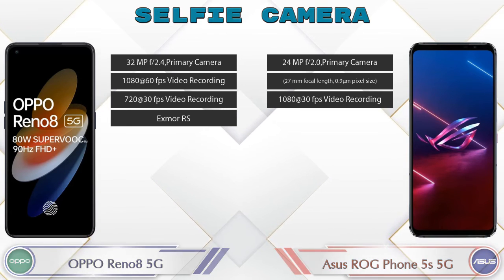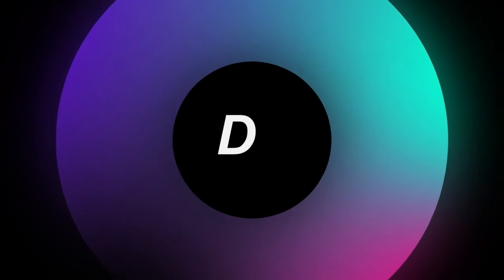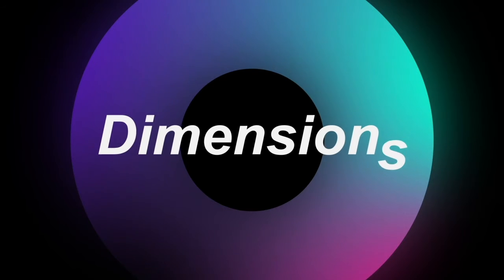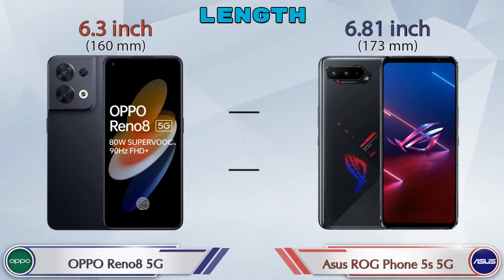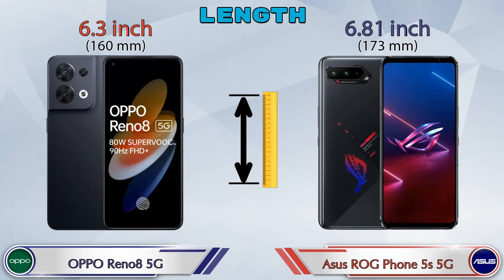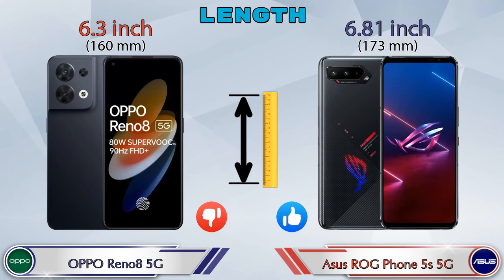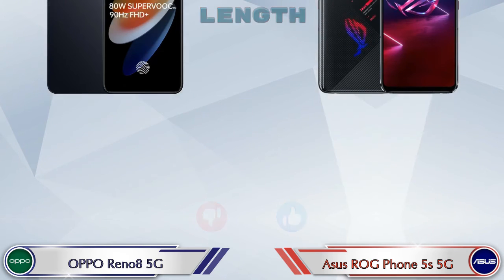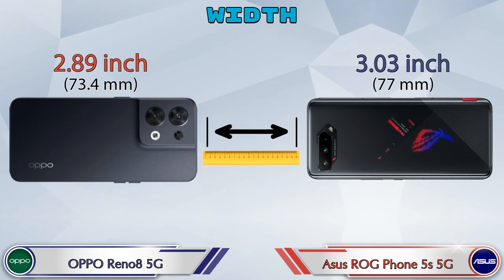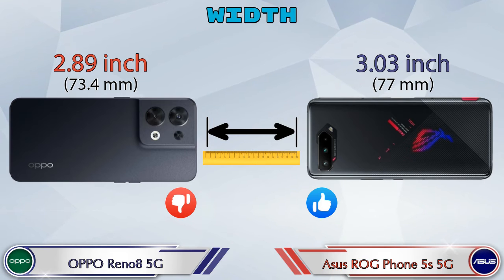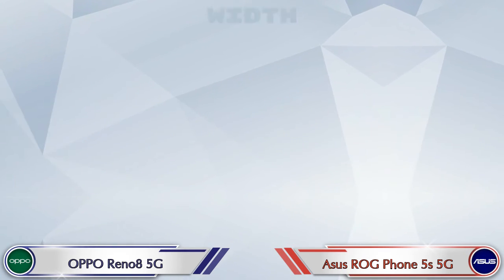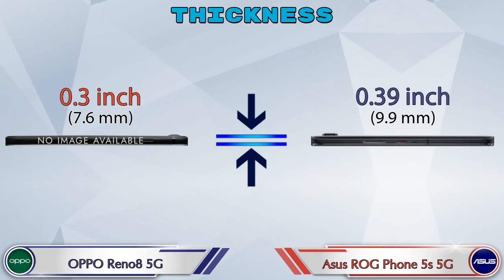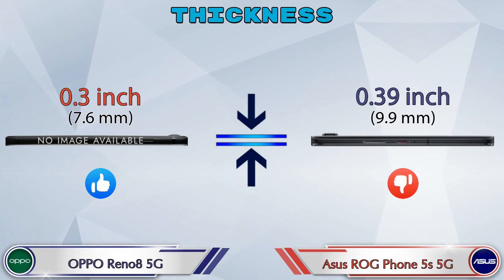Now let's check the details about dimensions. The length of the Reno 8 5G is 6.3 inches and the ROG Phone 5S 5G is 6.81 inches. Width for the Reno 8 5G is 2.89 inches. Thickness: the Reno 8 5G is 0.3 inches and the ROG Phone 5S 5G is 0.39 inches, which is bigger than the Reno 8 5G.